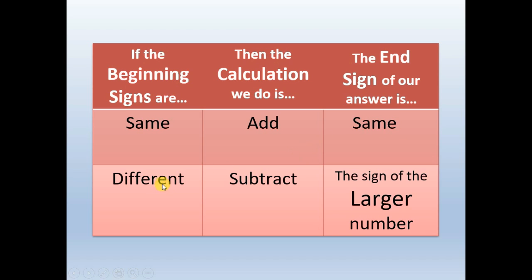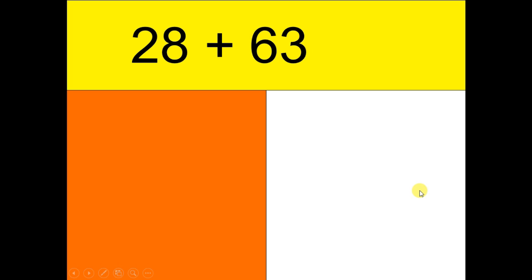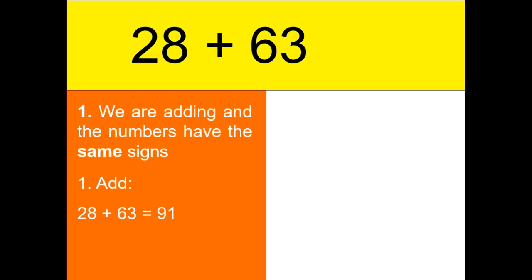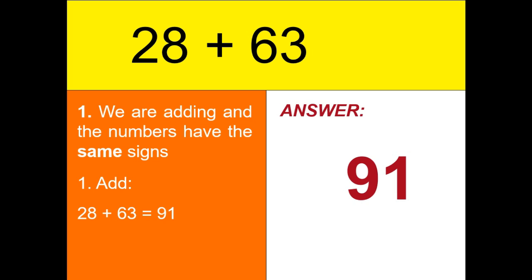To summarize: if the beginning signs are different, subtract the numbers and copy the sign of the bigger number. Let's consider an example: 28 plus 63. Both are positive, so we just add 28 and 63, giving us 91. The final answer is positive 91 since both 28 and 63 are positive.